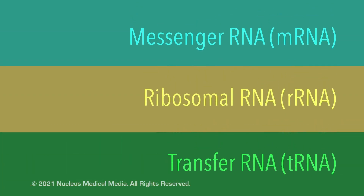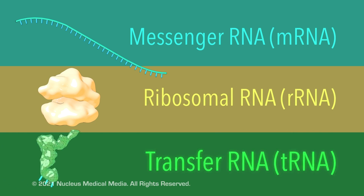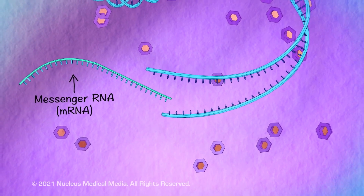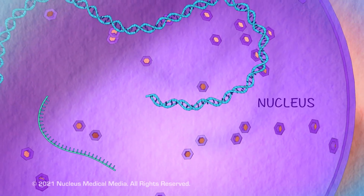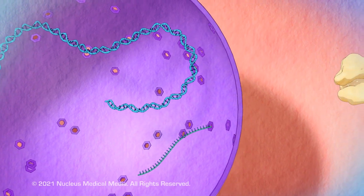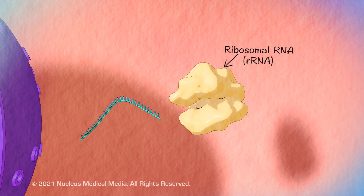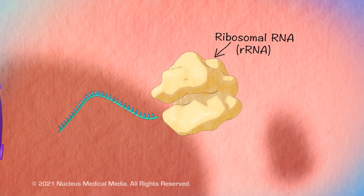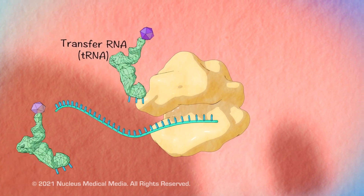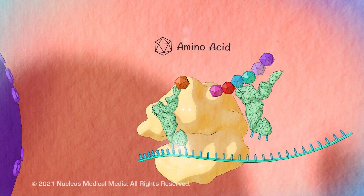There are three types of RNA: messenger RNA (mRNA), ribosomal RNA (rRNA), and transfer RNA (tRNA). Messenger RNA starts in a cell's nucleus, where it transcribes or copies the instructions for assembling a protein from a portion of the cell's DNA. The messenger RNA then takes these instructions to a ribosome in the cytoplasm. The ribosome, made of ribosomal RNA and proteins, is the site where the recipe is read and translated into a protein. Finally, transfer RNA in the cytoplasm brings specific amino acids to the ribosome so that the particular protein encoded by the recipe can be made.